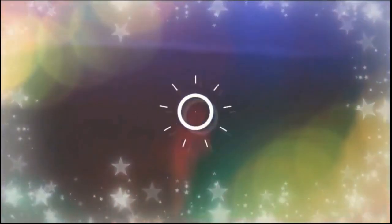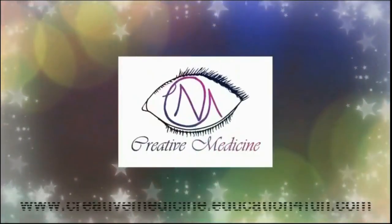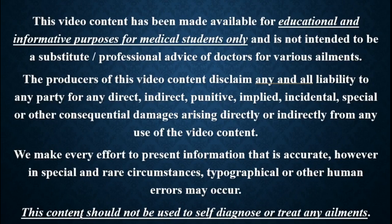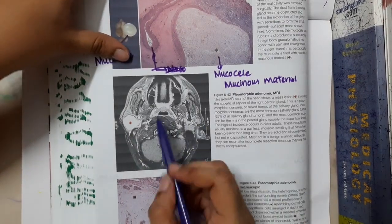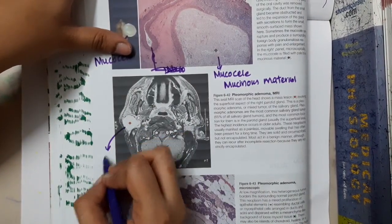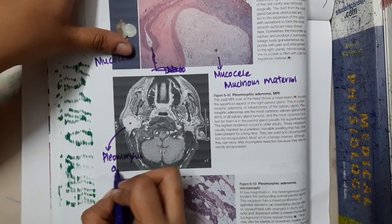Hello friends, welcome to Creative Medicine. In this lecture we will learn about pleomorphic adenoma. This is the picture of a CT scan. See here you will have the parotid gland, so this is actually a pleomorphic adenoma which is seen in the CT scan.